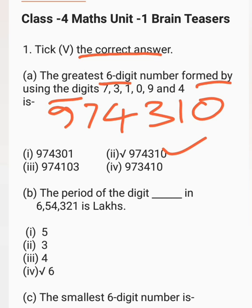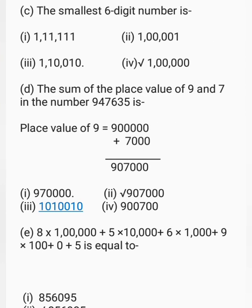Next question: the period of the digit in 6,54,321 is lakhs — meaning the digit 6 is in the lakhs period. Next question: the smallest 6-digit number is 1 lakh.